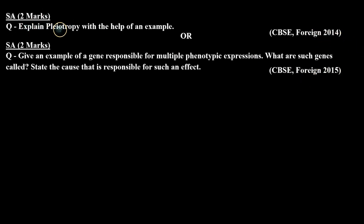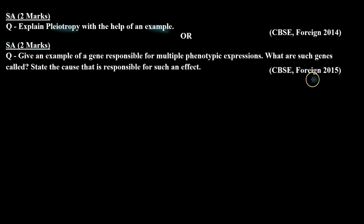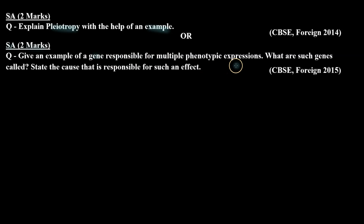The first question is: Explain Pleiotropy with the help of an example. The next form is a short answer type question for two marks, which was asked in the CBSE board examination 2015. That question is: Give an example of a gene responsible for multiple phenotypic expressions. What are such genes called? State the cause that is responsible for such an effect.